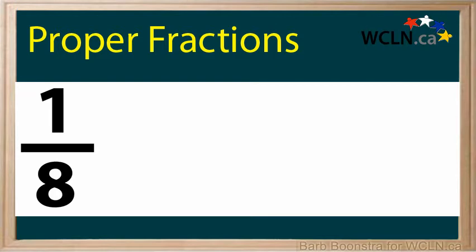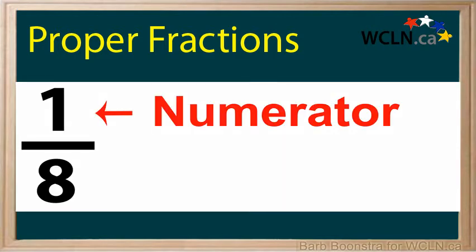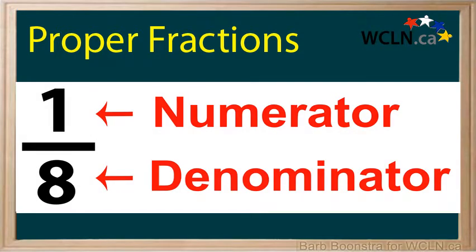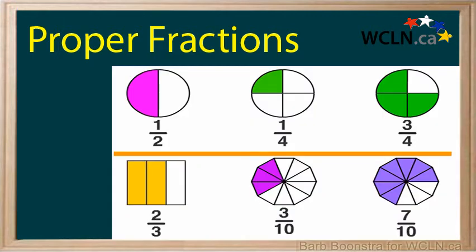A proper fraction has the numerator smaller than the denominator. You will notice that in all of these fractions — one-half, one-quarter, three-quarters, two-thirds, three-tenths, seven-tenths — the numerator is always smaller than the denominator. Hence, these are examples of proper fractions.